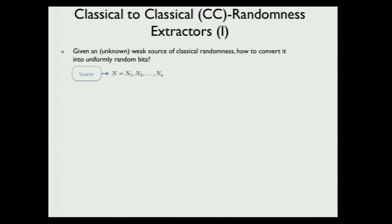So what's the classical randomness extraction? The basic question is: given an unknown weak source of classical randomness, how can we convert it to uniformly random bits? We have some source which is only weakly random but not uniformly random. The idea is we can apply a function to it and condense it to a smaller random variable M, and if we choose that function right, we hope the output is uniformly random.